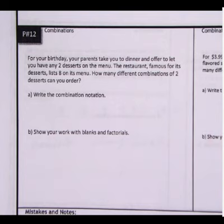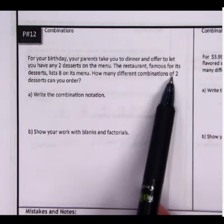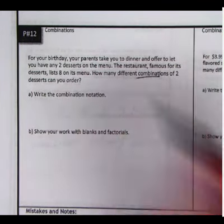So, for your birthday, your parents take you to dinner and let you have any two desserts off the menu. This restaurant is famous for desserts. They have eight on the menu, and you get to pick two combinations. How many different combinations of two can you make?